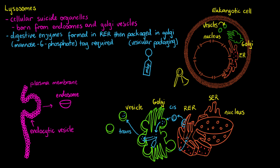At this point, the endosome is classified as an early endosome. It slowly matures and becomes more acidic through the action of vacuolar ATPase pumps within its membrane. These pumps actively adjust the proton concentration within the organelle to keep it relatively acidic. As the early endosome becomes more and more acidic, it matures into the late endosome. The late endosome is the organelle that will fuse with the lysosomal vesicle and allow the lysosome to mature into a full lysosome.